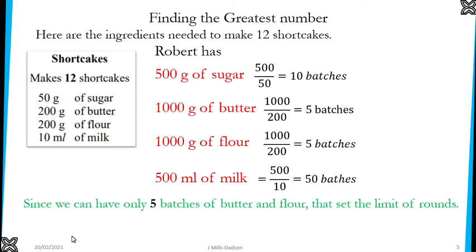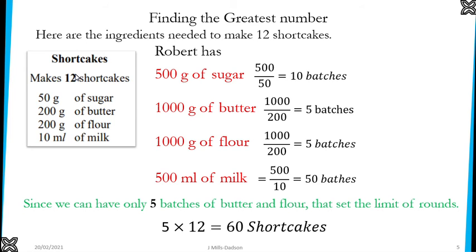5 batches of butter and flour set the limit because after 5 batches you cannot continue. Therefore the biggest batch you could ever pick is 5. Each batch is for 12, so to find the total: 5 times 12 means you can make 60 shortcakes. Remember this method — divide the ingredient you have by the recipe to know the number of batches you could ever make. Always the smallest number sets the limit.